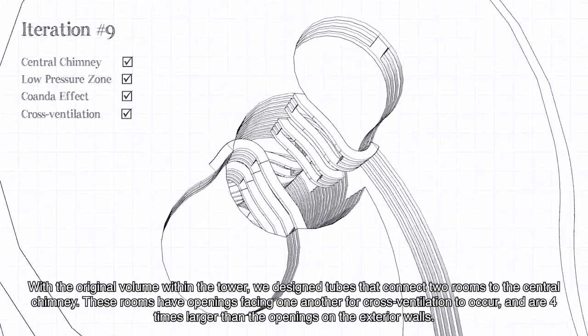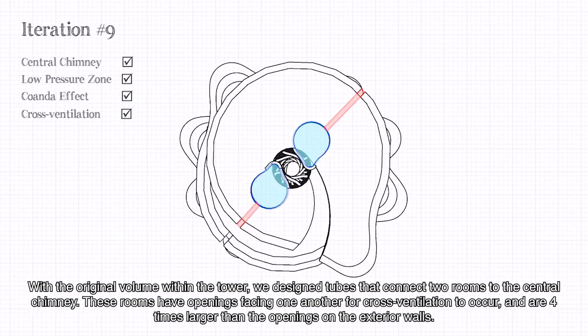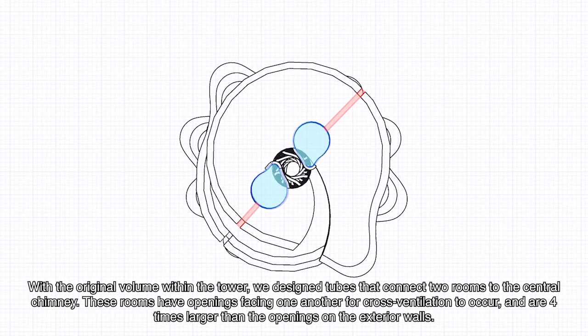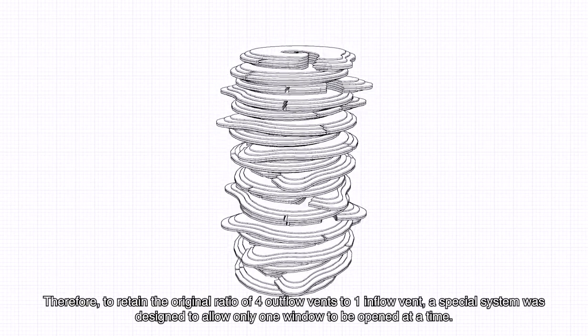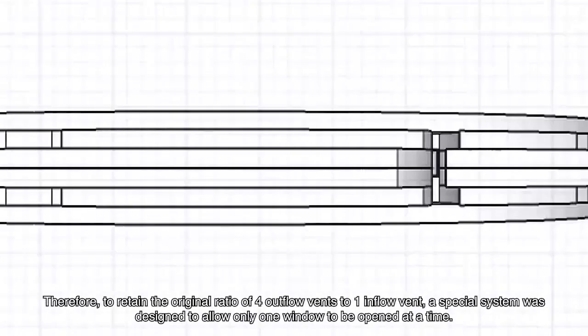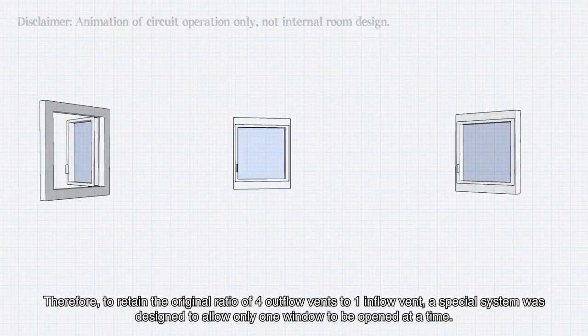With the original volume within the tower, we designed tubes that connect two rooms to the central chimney. These rooms have openings facing one another for cross-ventilation to occur, and are four times larger than the openings on the exterior walls. Therefore, to retain the original ratio of four outflow vents to one inflow vent, a special system was designed to allow only one window to be open at a time.